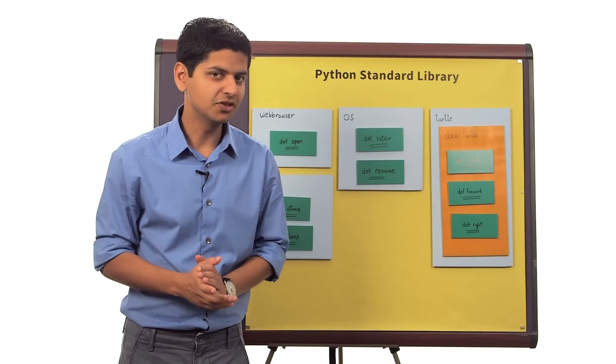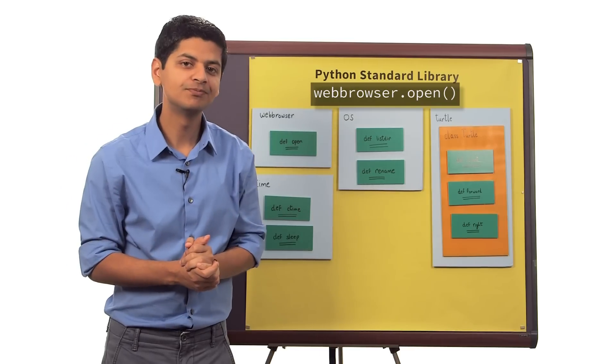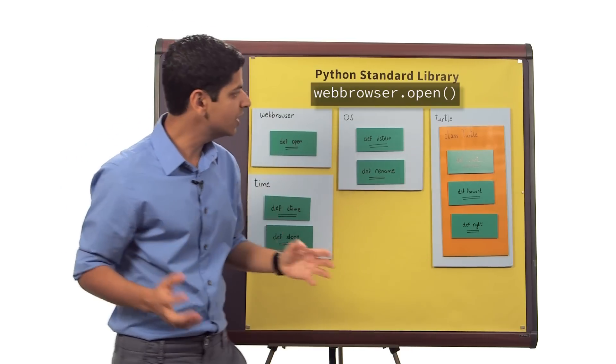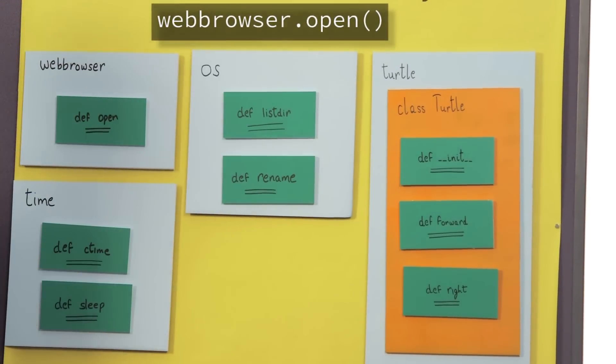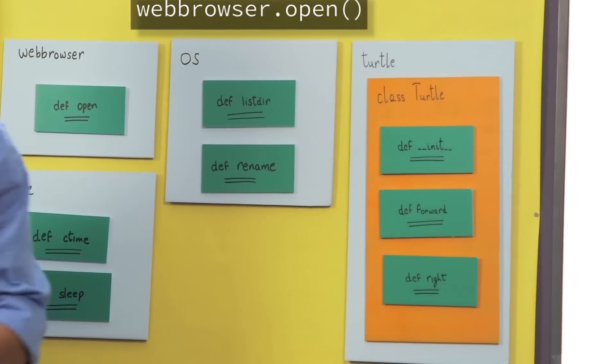When we wanted to use functions previously, we wrote code like webbrowser.open. But when we wanted to create instances of this class, classTurtle, we wrote code that said turtle.turtle.